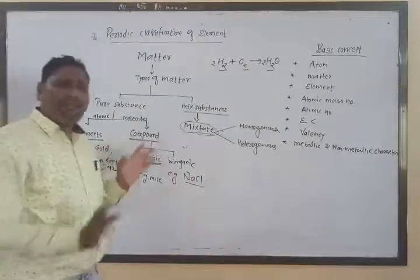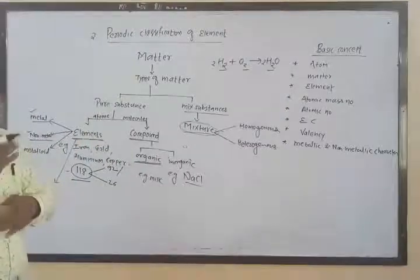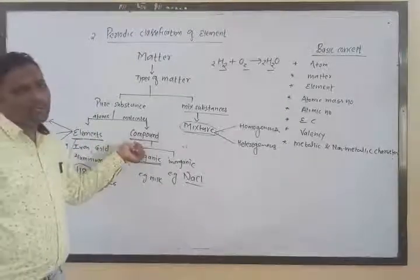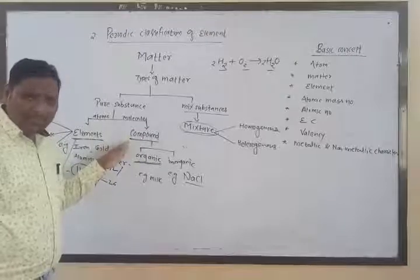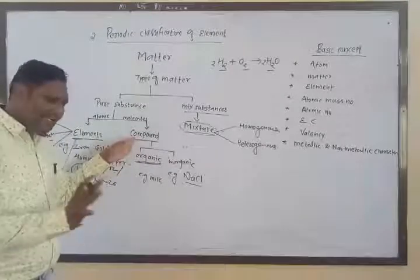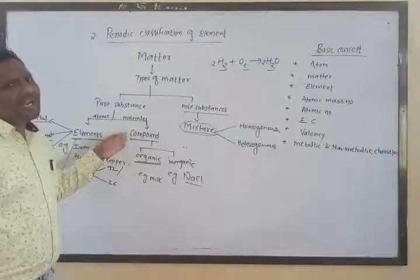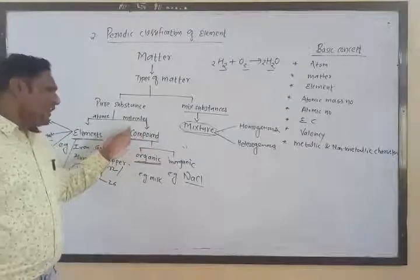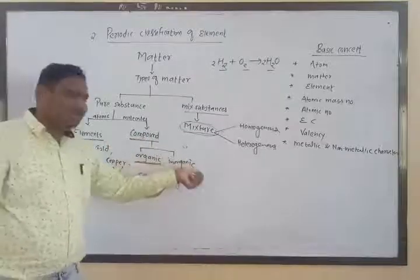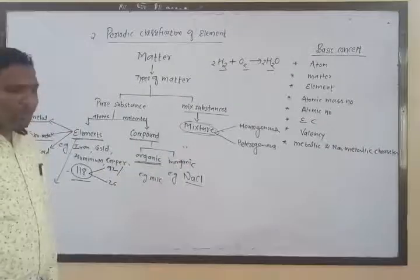A compound is formed when two or more elements chemically combine in a fixed proportion of their atomic mass. Compounds are of two types: organic and inorganic.